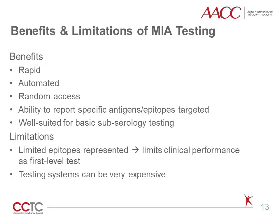The benefits of MIA-based ANA testing are derived from their intrinsically automated nature and placement on random access analyzers, giving them rapid cycle times. Linking signal to specific epitopes can also allow for more specific pattern-like reporting of results. The primary limitation is that only limited numbers of epitopes are currently included in MIA-based methods, creating problems for clinical performance in terms of sensitivity and specificity when compared to IFA and ELISA techniques using HEP2 nuclear homogenate as substrate. Consequently, MIA is not recommended as a screening test for ANA. The expense of testing systems on the market is also considered high.